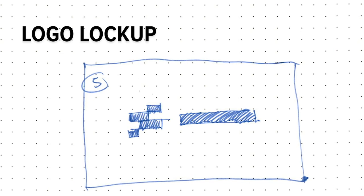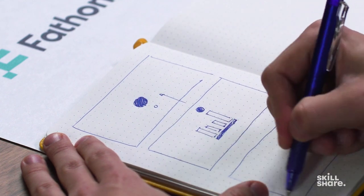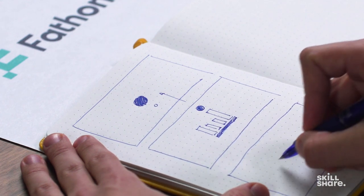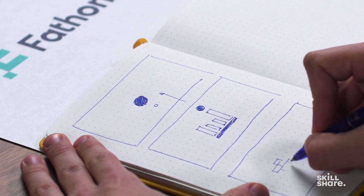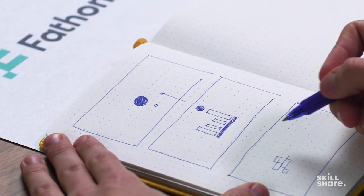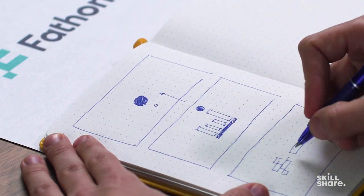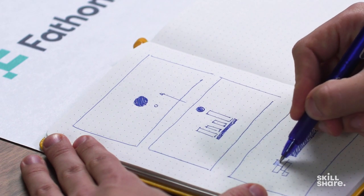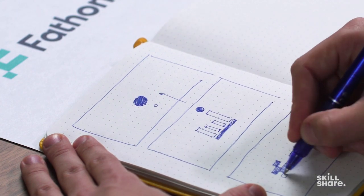Now we move on to the third component: the final logo lockup. Roughly draw a rectangle and visualize where you want the logo compositionally. I want it a little bit smaller, visually tracing the mark. It's important to have some elements structurally sound in your storyboards, but for the logotype, just use a block to indicate where it will stand. Adding a bit of fill helps you or the client visually understand the composition you're working through.